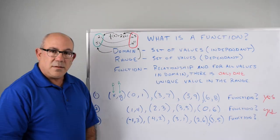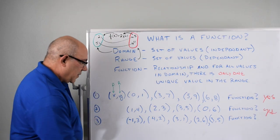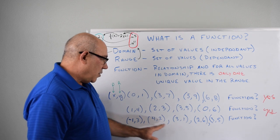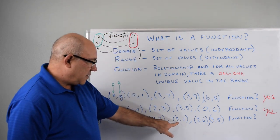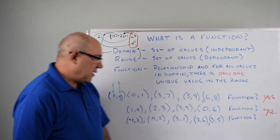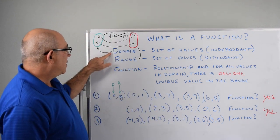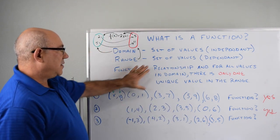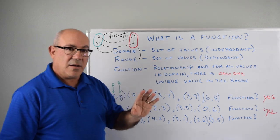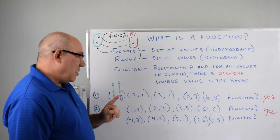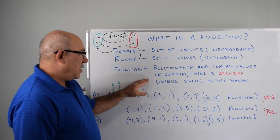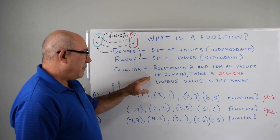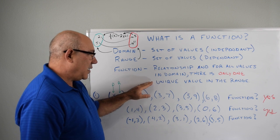Okay, so for the third one, what we have is we have minus 1, 4, 3, 2, and 3. So you can see we have three twice in the domain. That's okay, because it doesn't say that we have to have a unique value in the domain. But we can only have a unique value in the range.